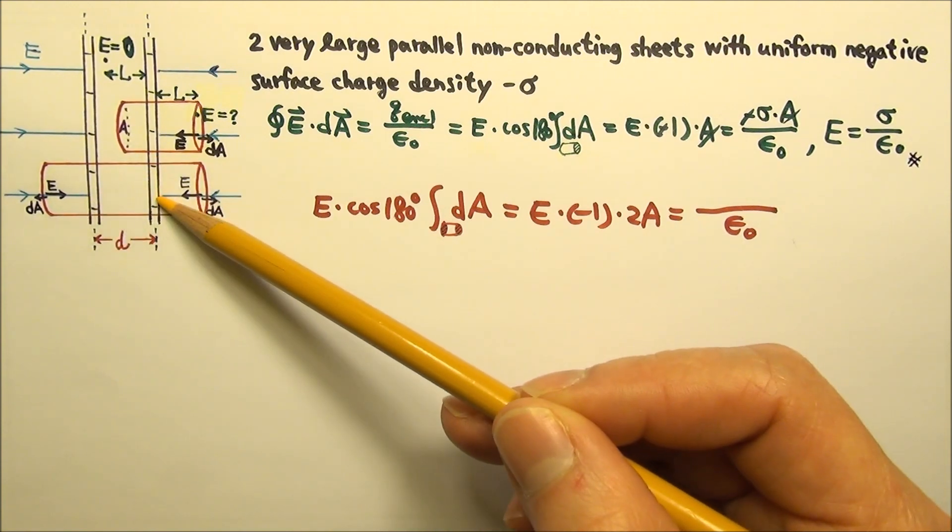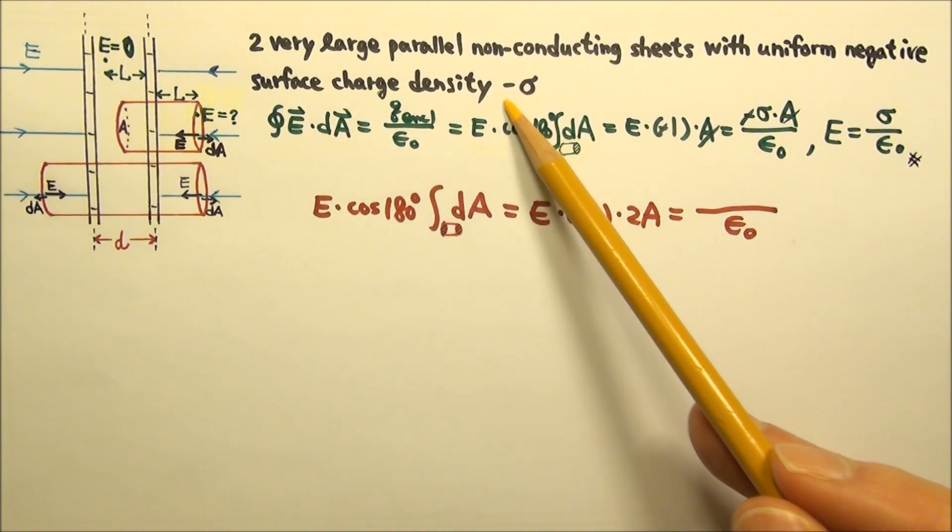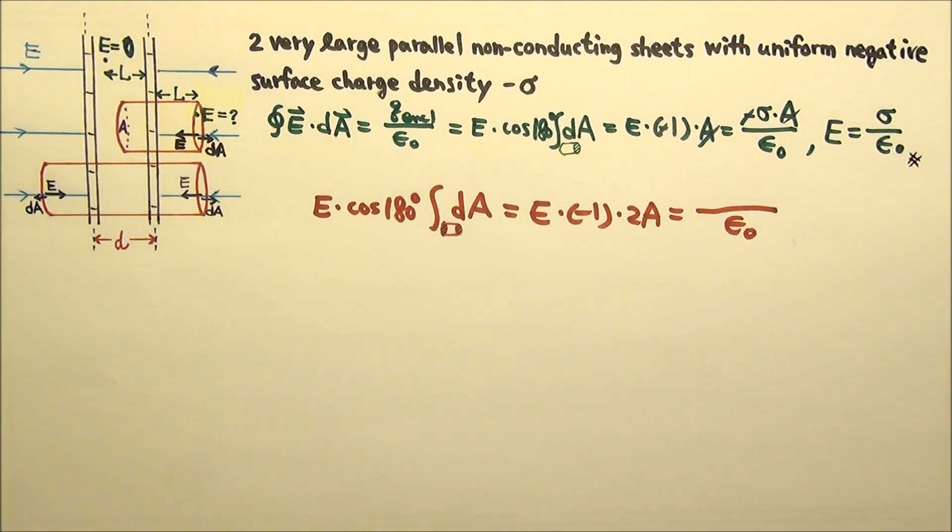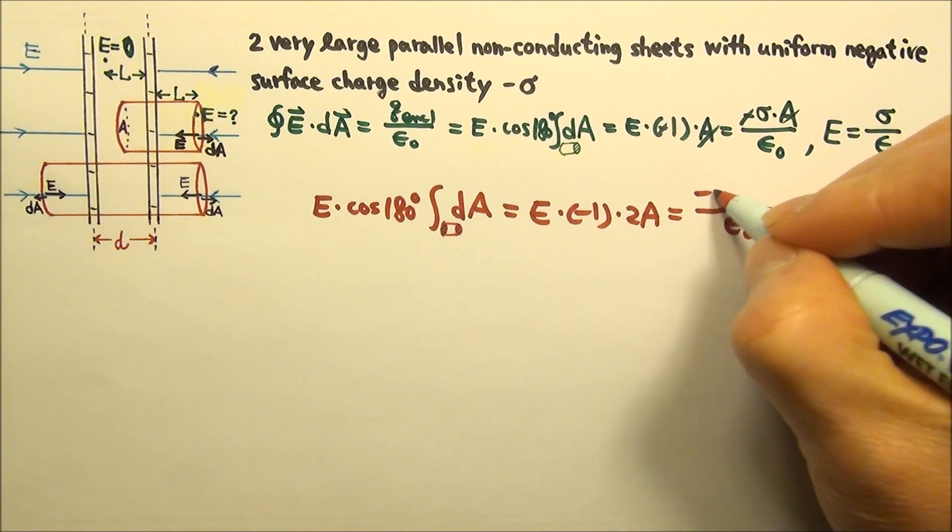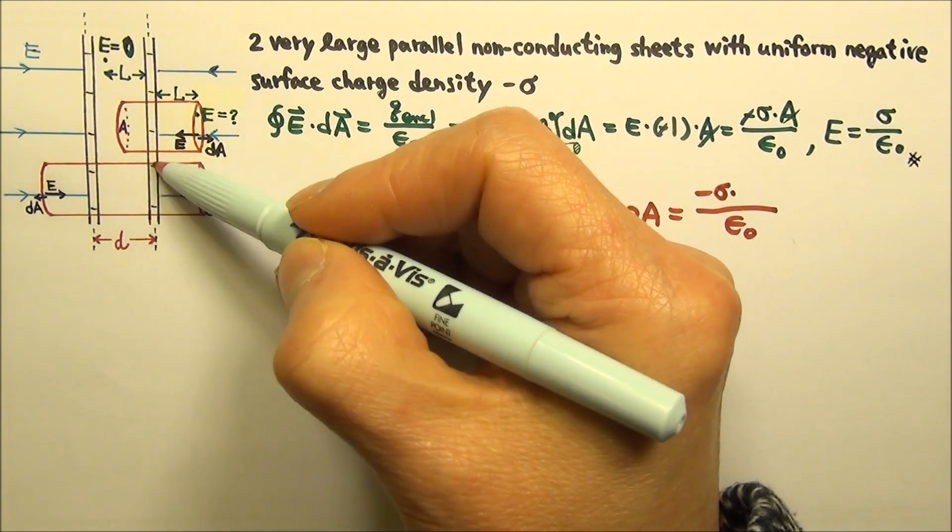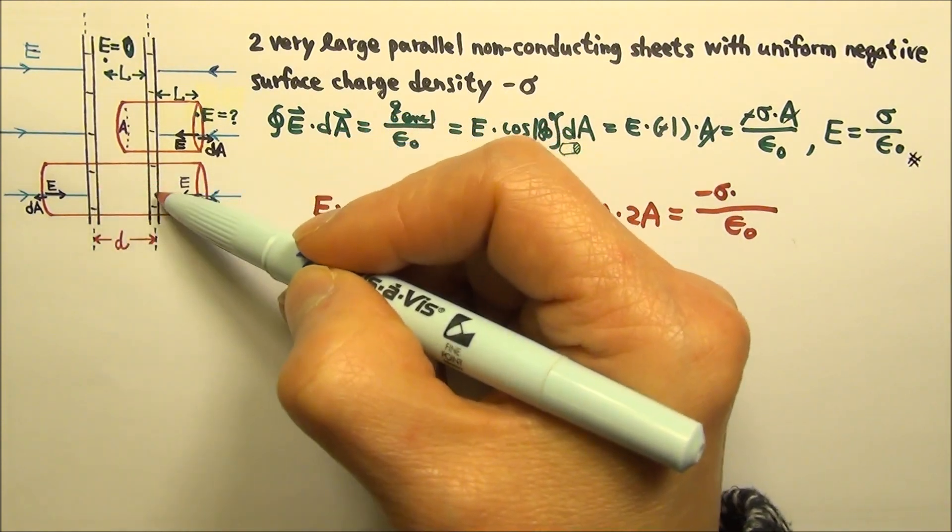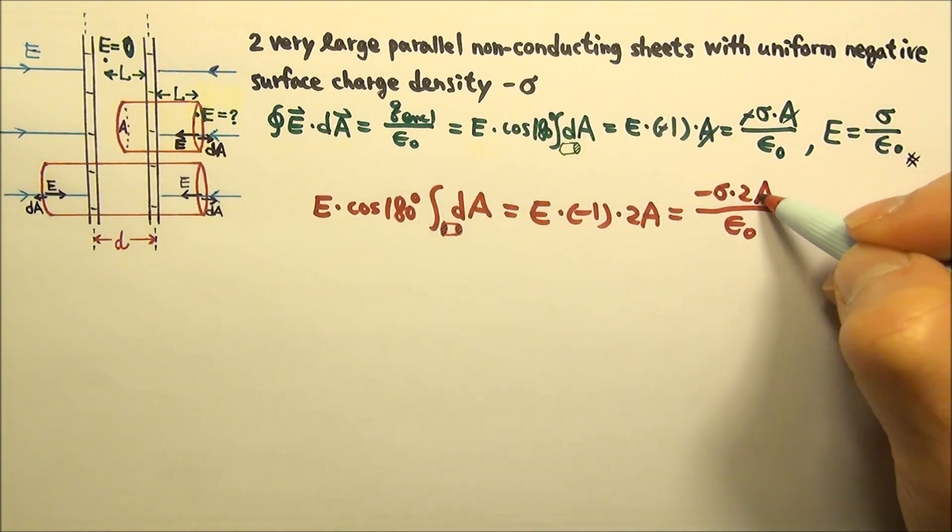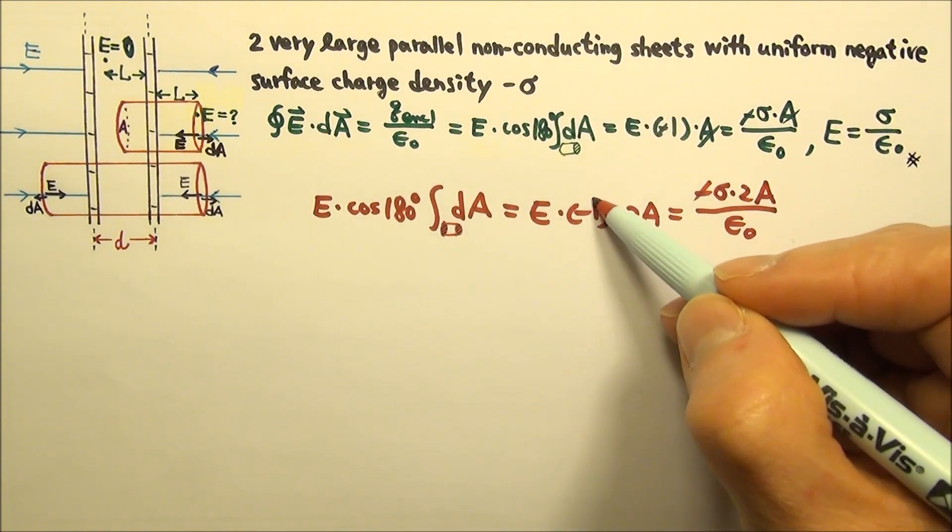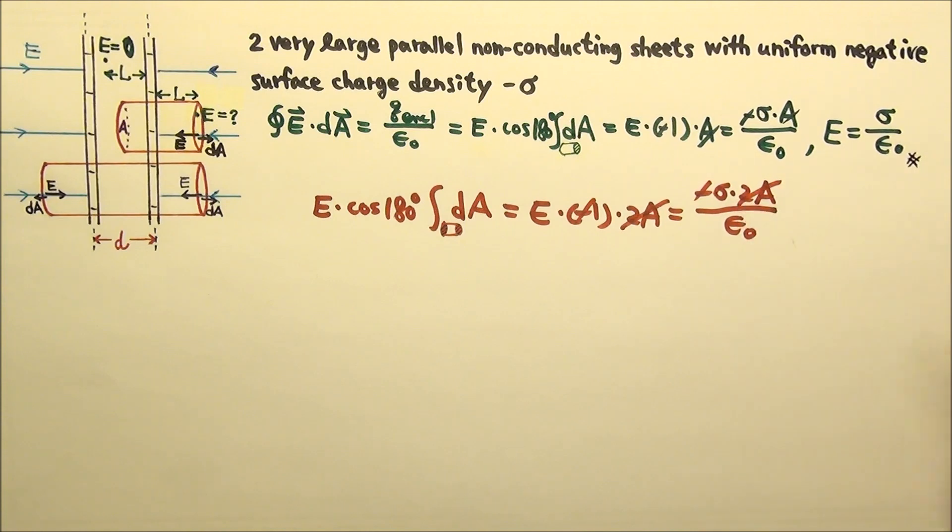They both have the same surface charge density, negative sigma. So the q enclosed would be negative sigma times the area, which would be A plus A, 2A. So the negative cancels, 2A cancels.